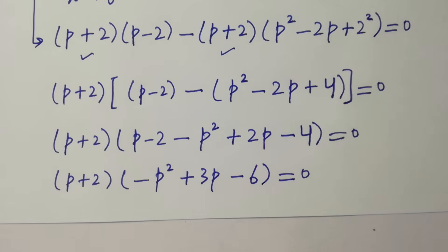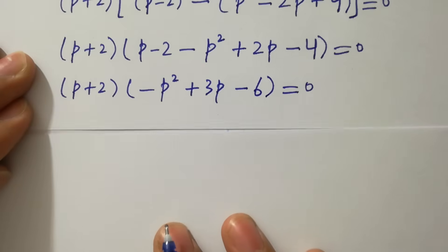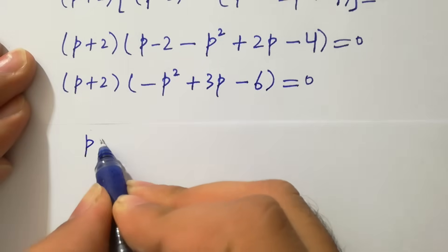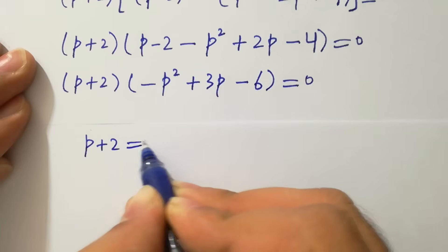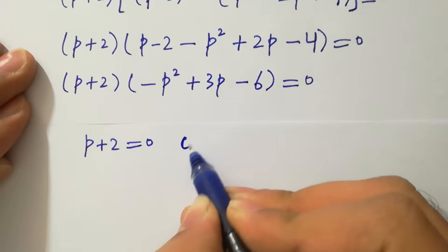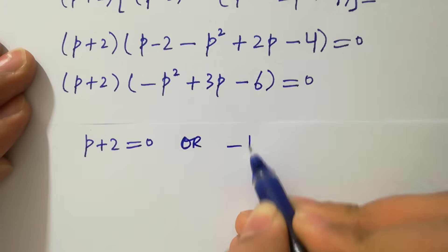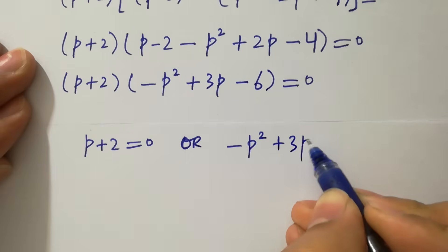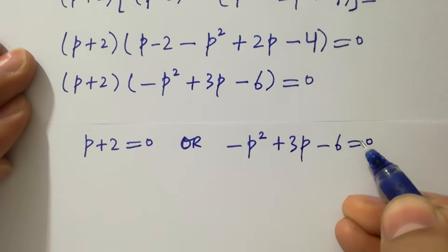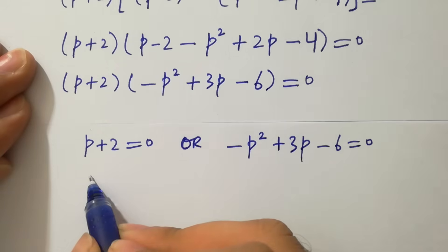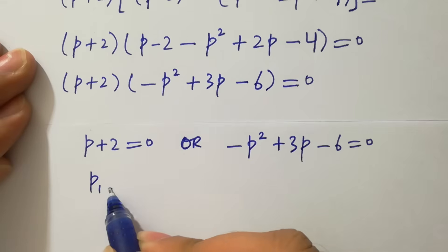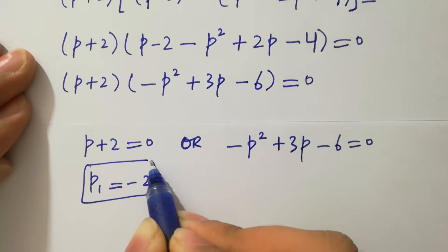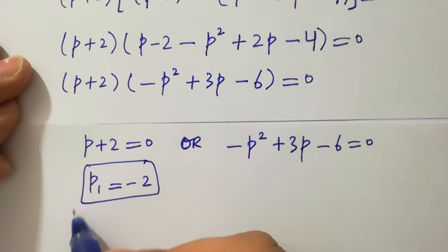So we have (p plus 2)(minus p squared plus 3p minus 6) equals zero. Setting the first factor to zero gives p plus 2 equals zero, so p₁ equals minus 2, which is our real solution.